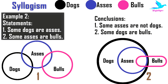Testing conclusion 1, 'Some asses are not dogs': According to figure 1 this is correct, but according to figure 2, asses is an entire subset of dogs, so all asses must be dogs. Due to this uncertainty, this conclusion cannot follow. For conclusion 2, 'Some dogs are not bulls': According to figure 1 some dogs are not bulls, but according to figure 2 some dogs are also bulls. Due to uncertainty, we cannot conclude this follows either. Hence both conclusions 1 and 2 cannot follow.